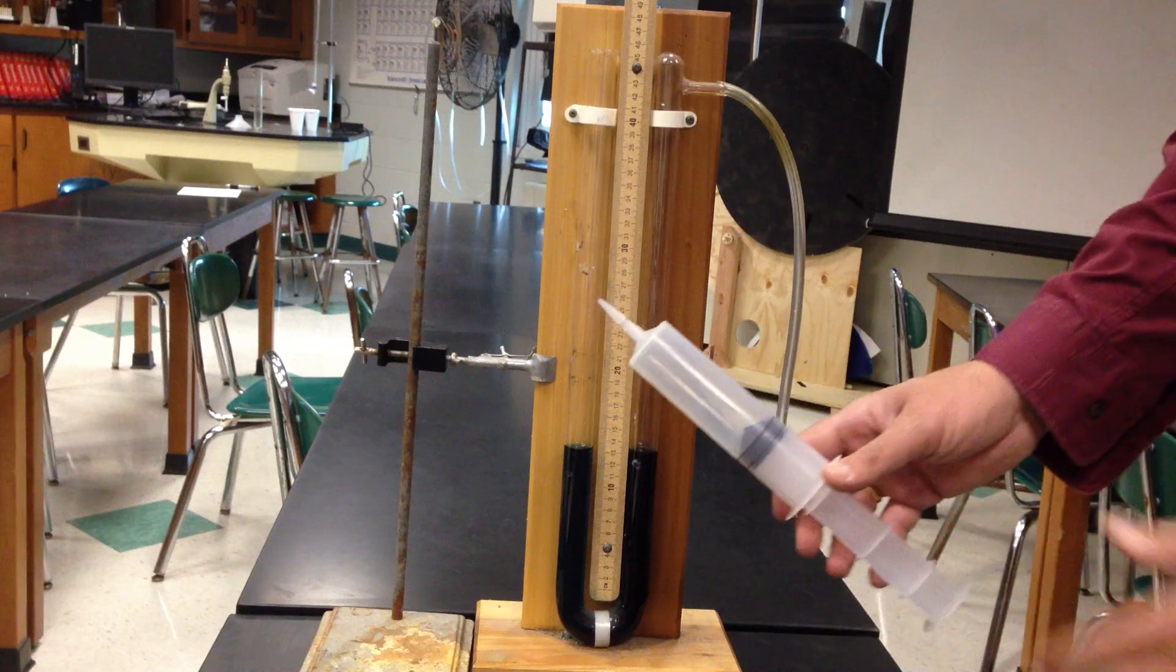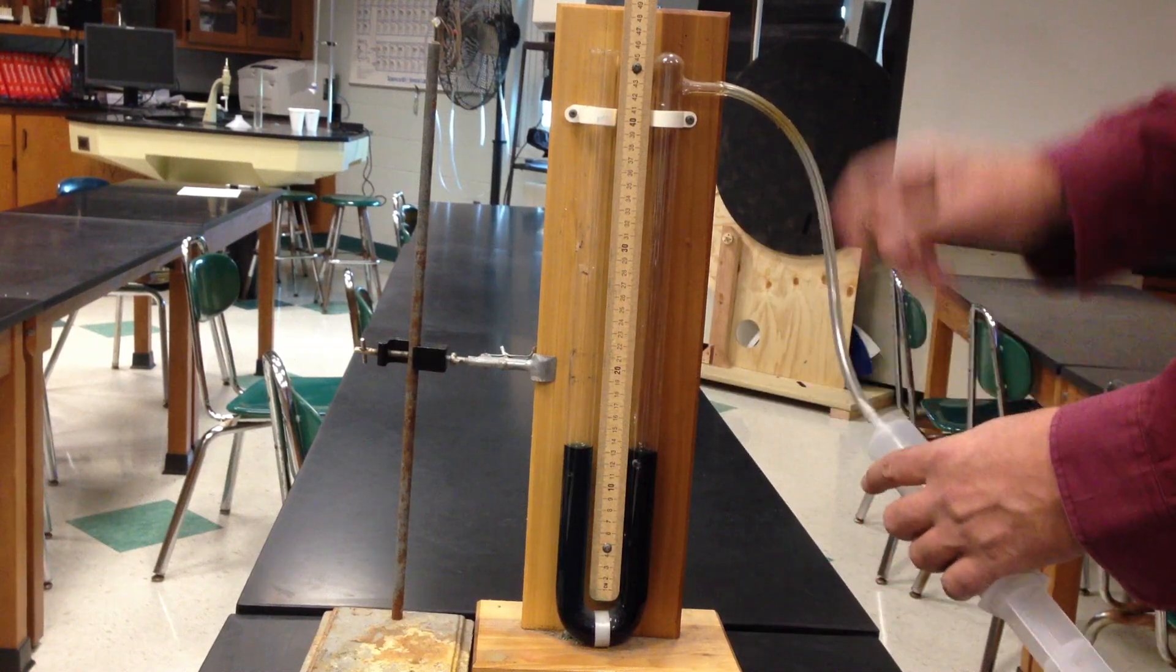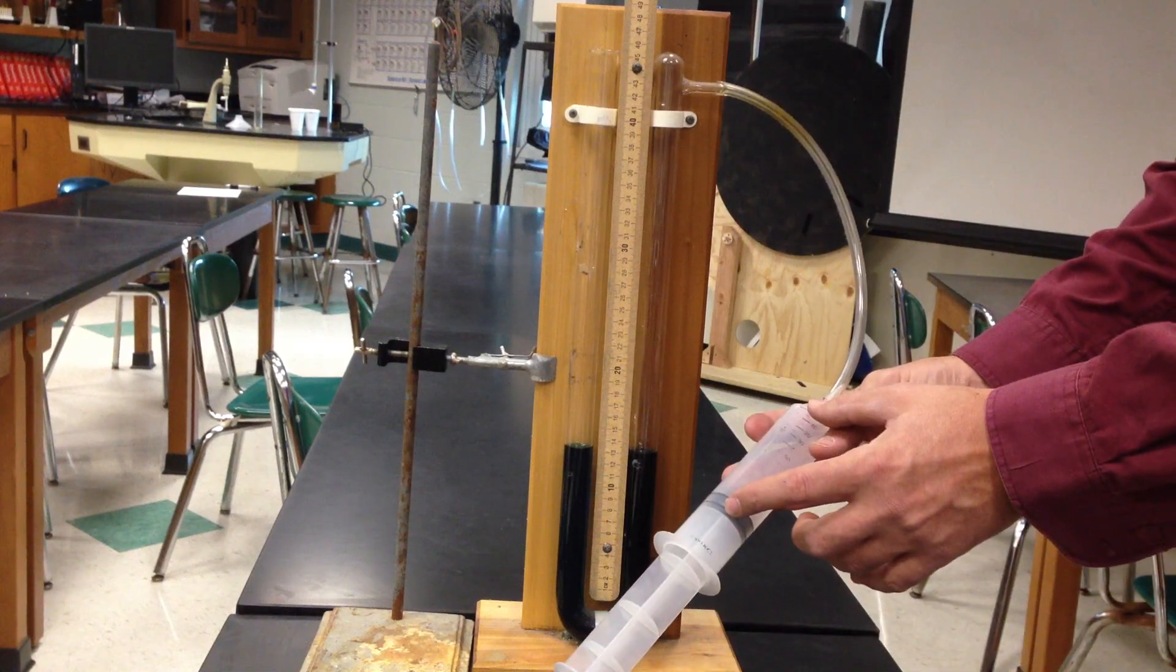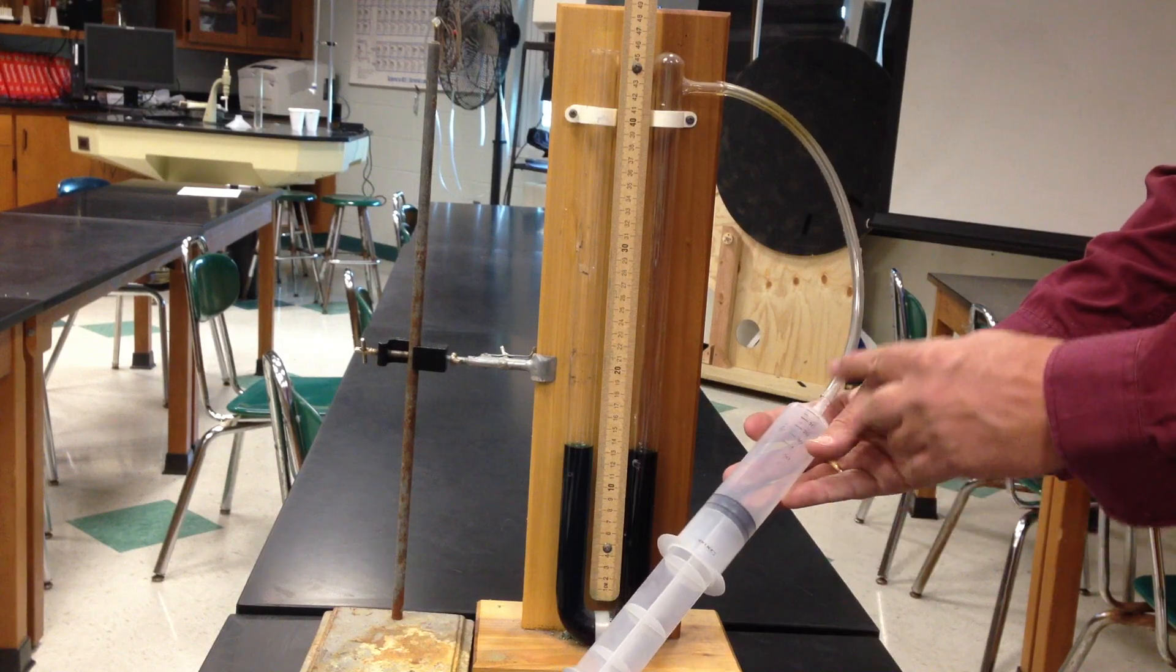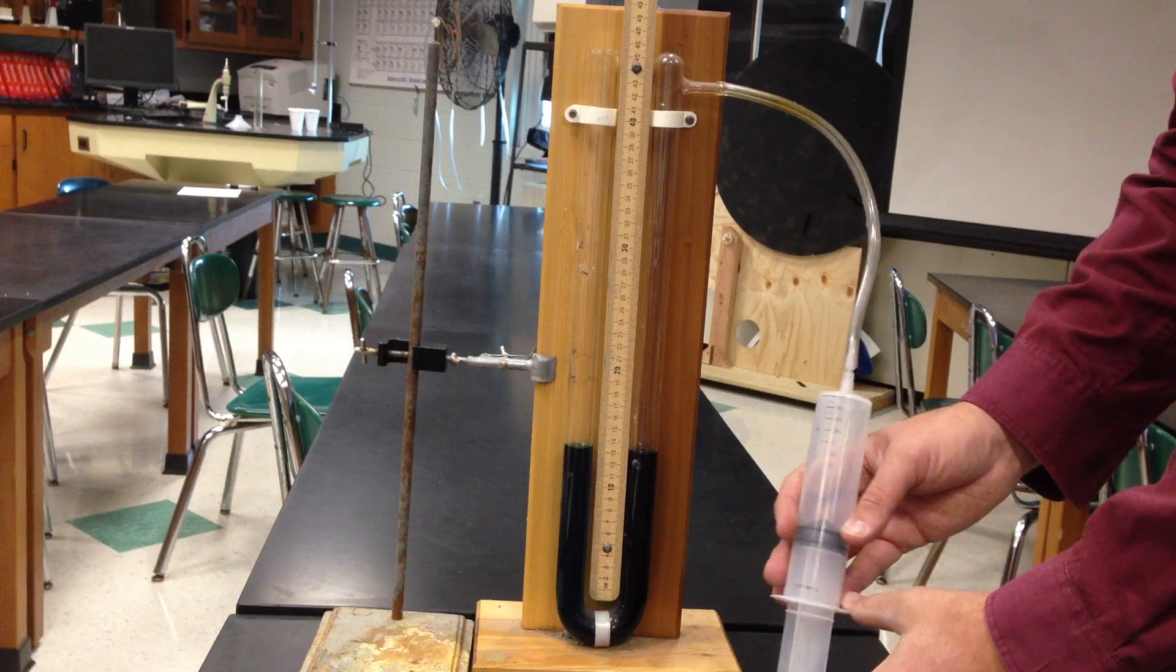what I'm going to do is I'm going to take a syringe, and I'm going to attach it to the enclosed tube, and now I'm going to make the space smaller for the same amount of gas that's trapped in this area. So by making the space of the volume smaller,